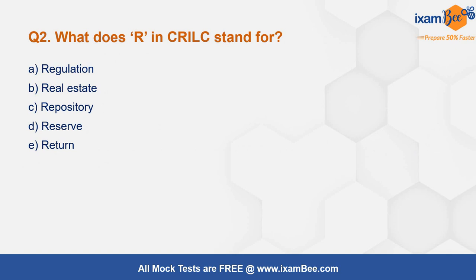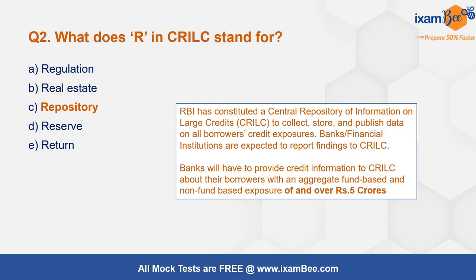Next question: what does R stand for in CRILC? We just talked about an entity where we have to report any kind of stress being seen in big accounts or big loans that the bank has given. The correct answer is Repository. CRILC is the Central Repository of Information on Large Credits, which collects, stores, and publishes all data on the borrower's credit exposure. All banks and financial institutions have to report for all large exposures — that is, equal to or more than 5 crores.